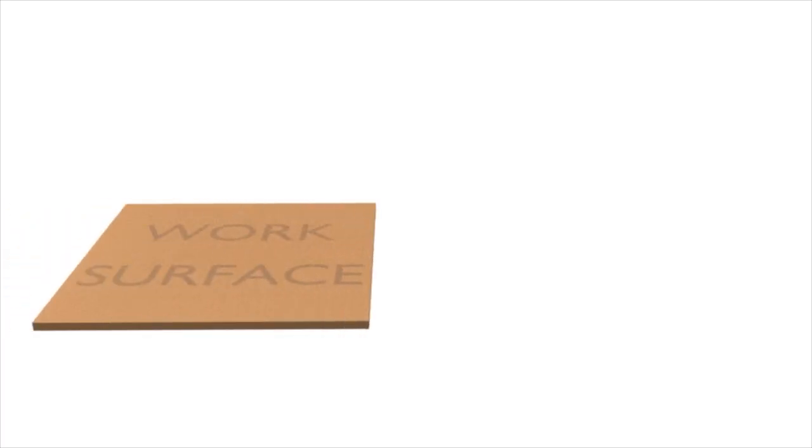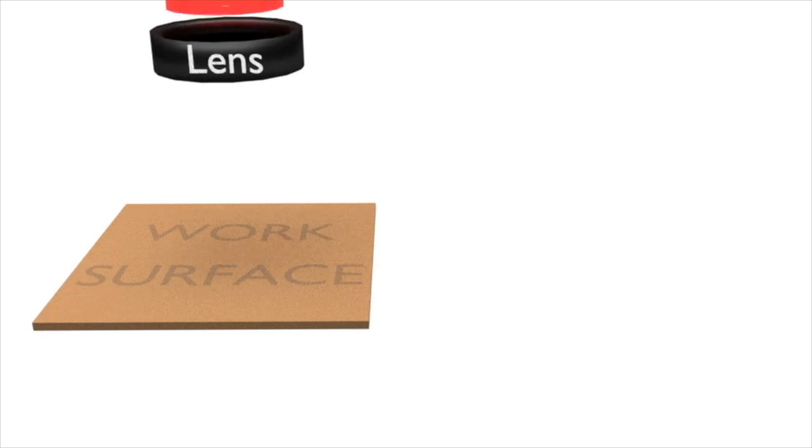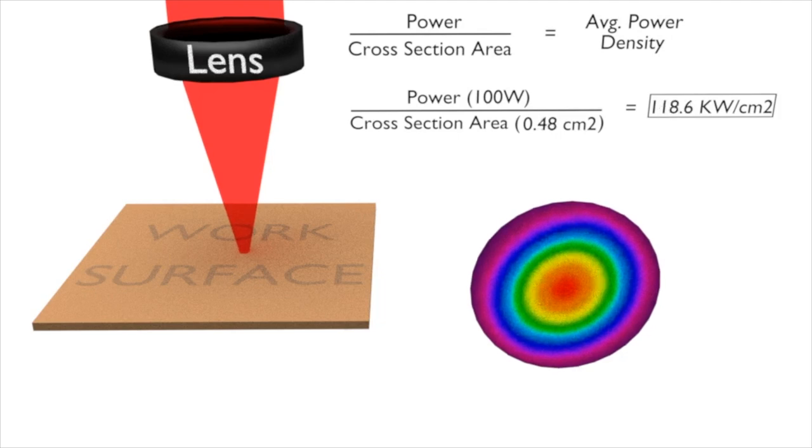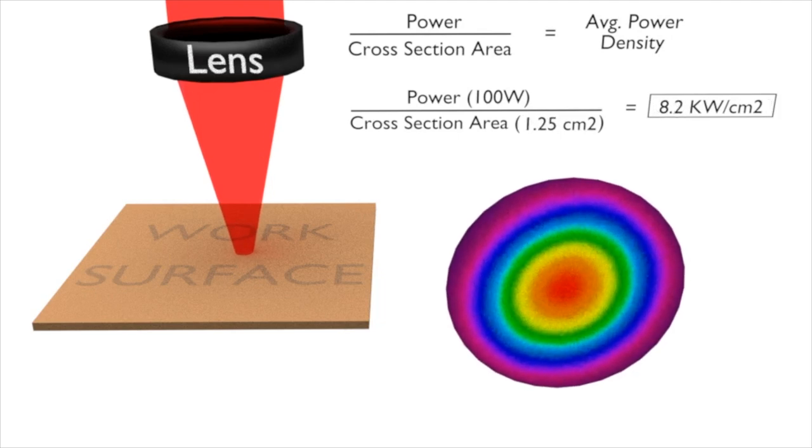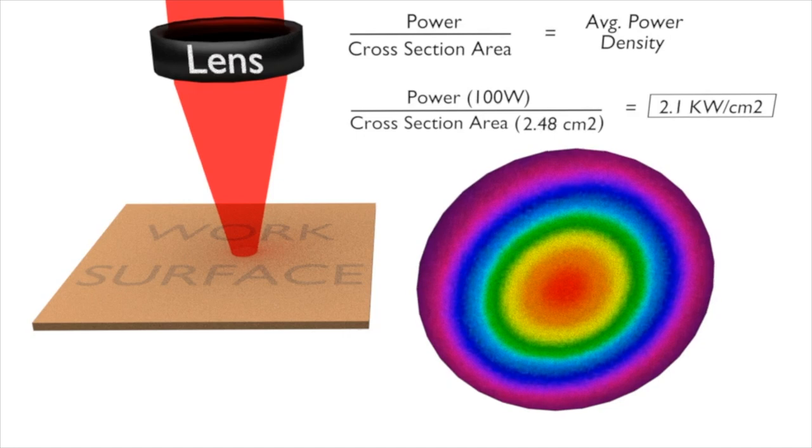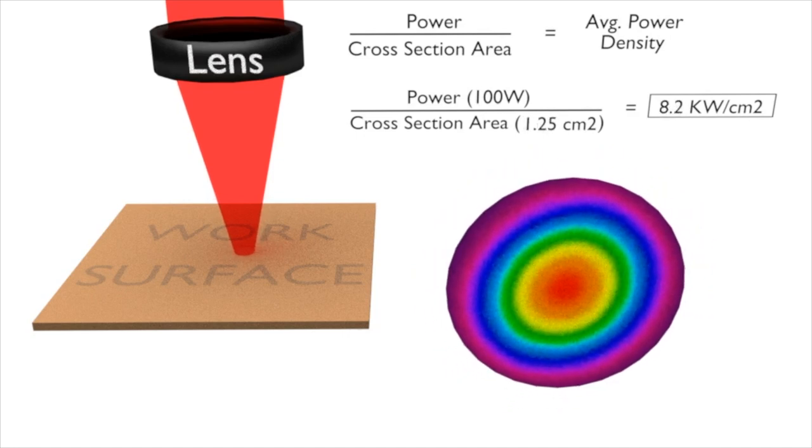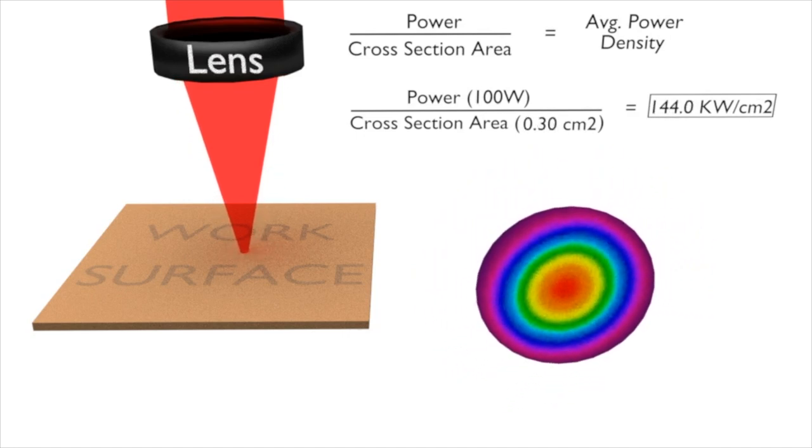If the laser focuses before the work plane, the power density is reduced as the beam is expanding before impinging on the work surface. If the laser focuses beyond the work plane, the power density is also reduced. Knowing the exact location of the focused spot is essential to quality output.